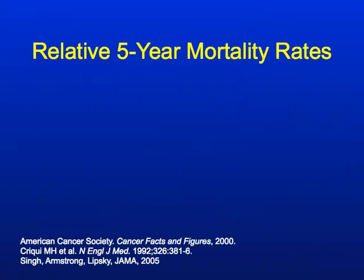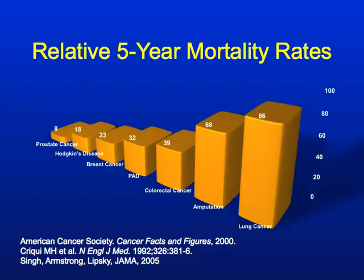So why is this so important? Why do we care about diabetic foot amputations? Looking at the relative five-year mortality rate, amputation is second only to lung cancer. 68% of patients undergoing a diabetic foot amputation will be dead in five years. Also illustrated here is PAD — peripheral arterial disease — with a 32% five-year mortality rate. We now know that peripheral arterial disease is considered a coronary equivalent, and patients diagnosed with PAD need intensive therapy to prevent future cardiovascular and cerebrovascular events.